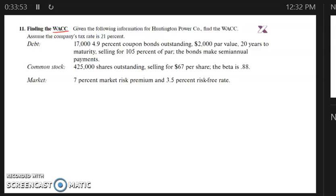There's also 425,000 shares outstanding of stock selling at $67 per share and a beta of 0.88. We'll use that along with the market risk premium and the risk-free rate to calculate the cost of equity.